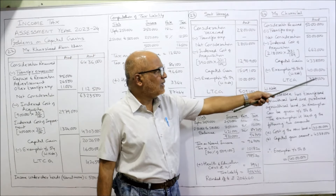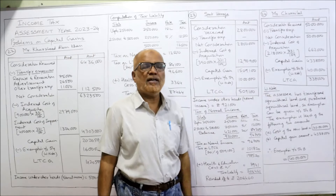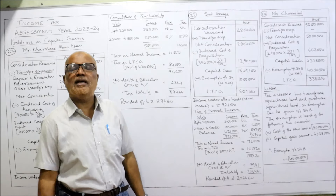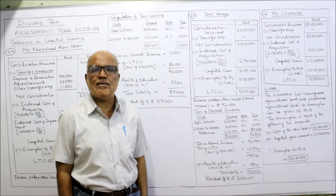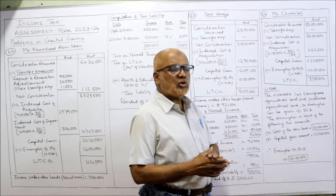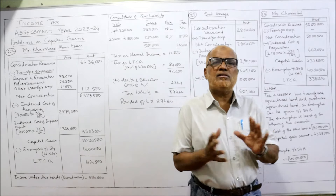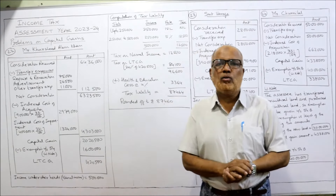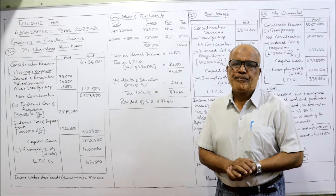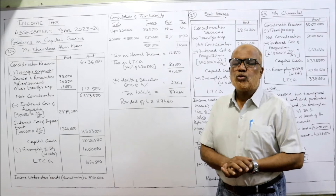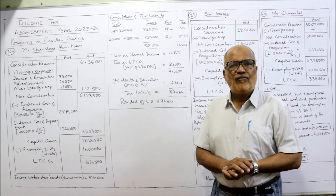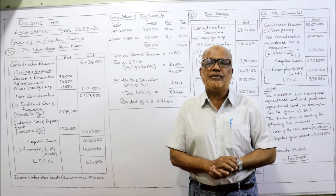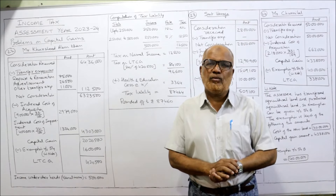Deducting exemption of Rs. 40,00,000 from capital gain, the taxable long-term capital gain is Rs. 3,38,000. You have seen almost all the points are the same with just one or two new points to remember. We have completed problems 22, 23, and 24. We will continue with the next problem in the next video. Thank you.